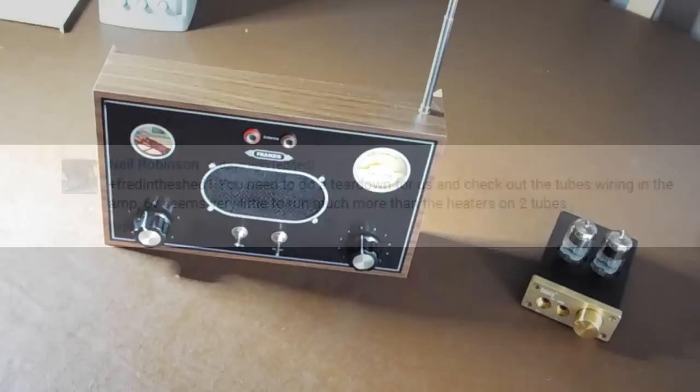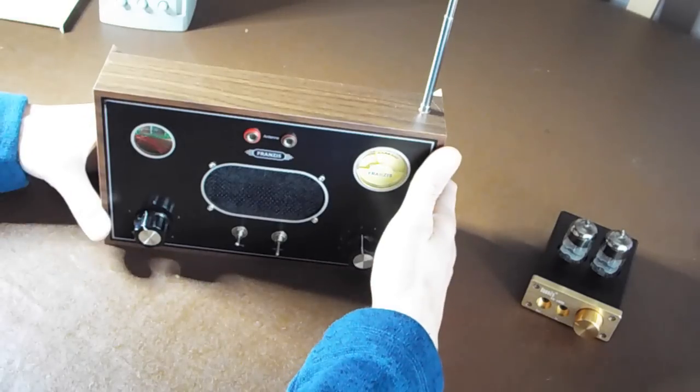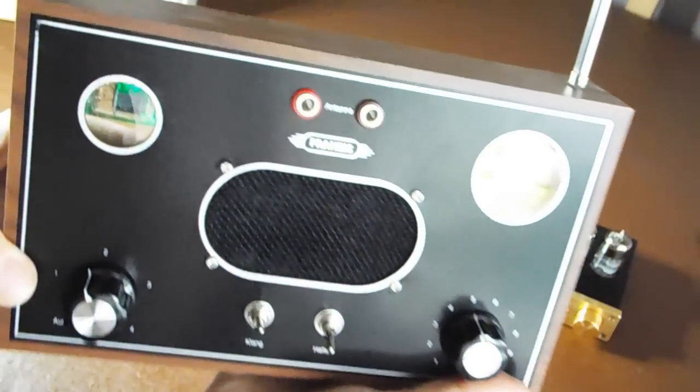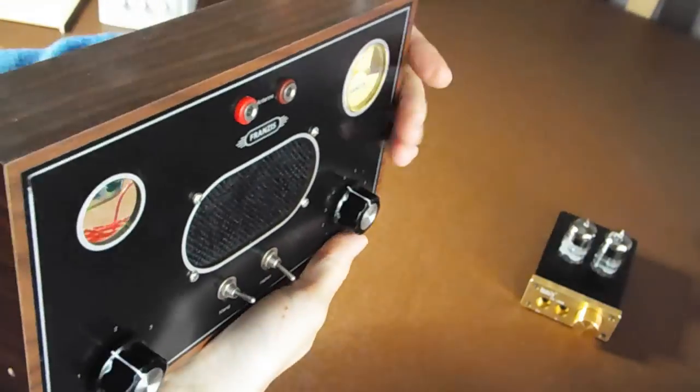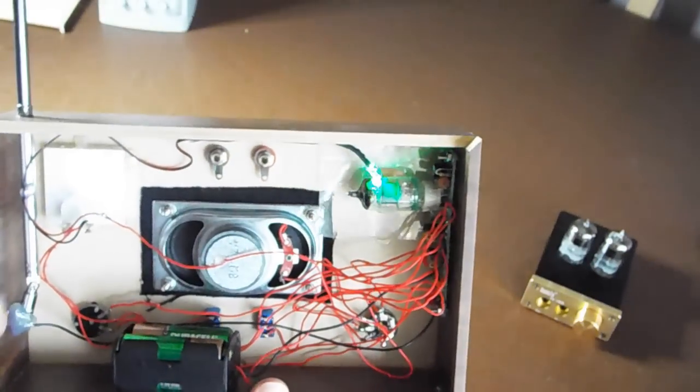But before I take the amplifier apart I can confirm that it is possible that you can get battery powered tubes. This is a German radio kit that I built a few years ago. And as you can see here, just through the little window, it does have a battery powered tube. And this radio runs on four double A batteries, 6 volts.